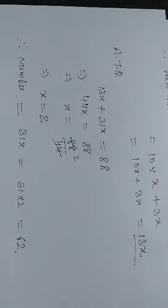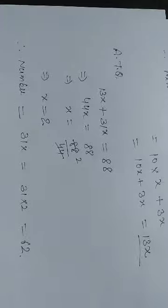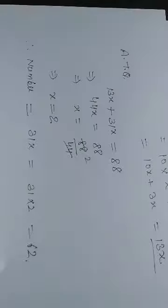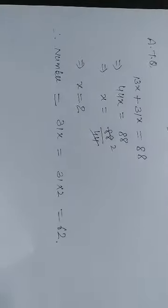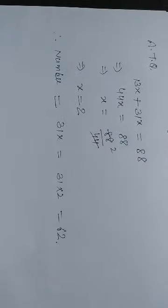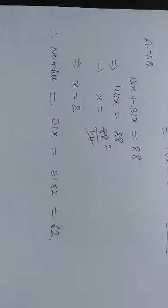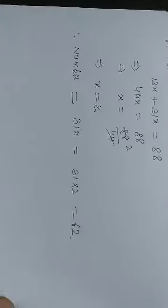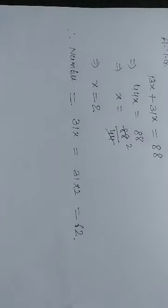Next is question number 5. Shobo's mother's present age is 6 times Shobo's present age. Shobo's age 5 years from now will be one-third of his mother's present age. What are their present ages?